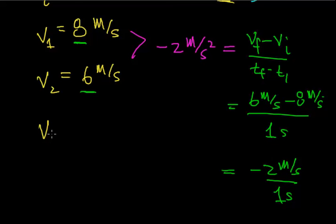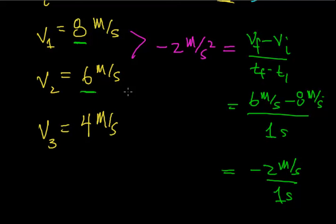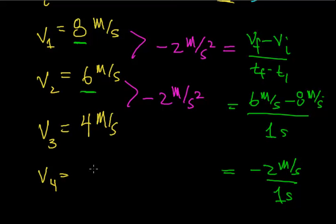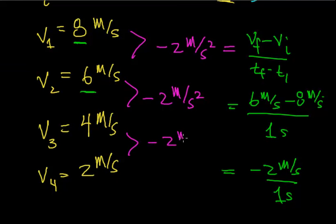Continuing this process, after an additional second of slowing down, the object goes from 6 meters per second to 4 meters per second in 1 second. The velocity is changing by 2 meters per second squared — 2 meters per second every single second. After one more second, the velocity goes from 4 meters per second to 2 meters per second. Notice again that the acceleration is constant — the velocity is continuously decreasing at a constant rate of negative 2 meters per second per second.